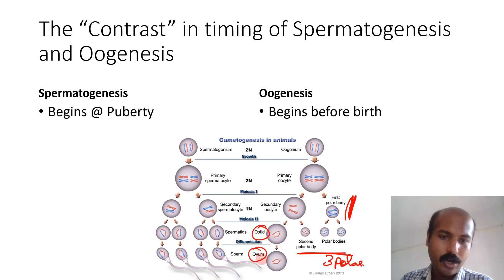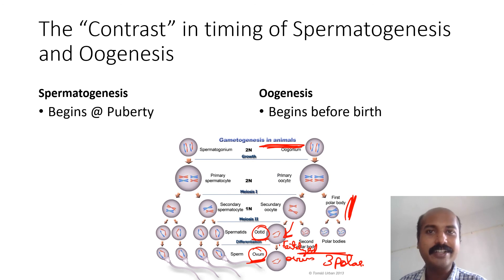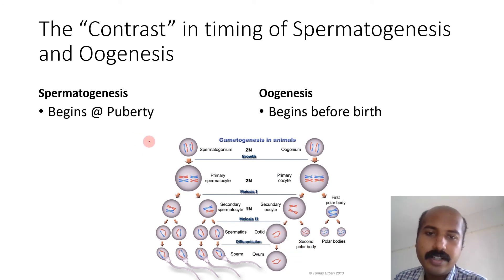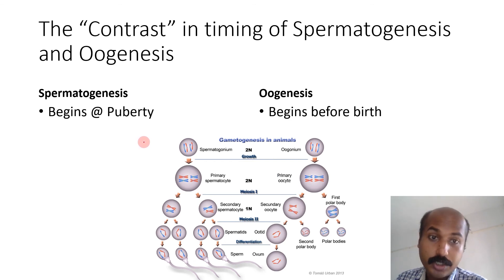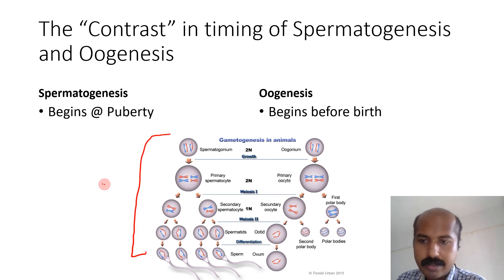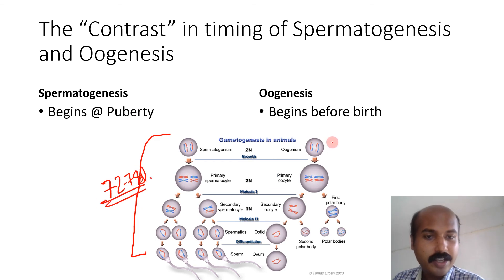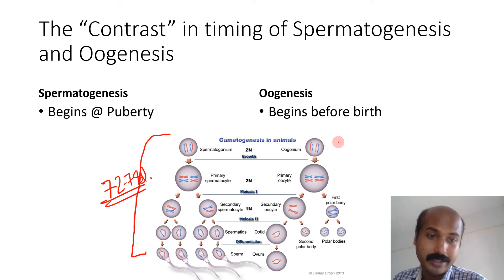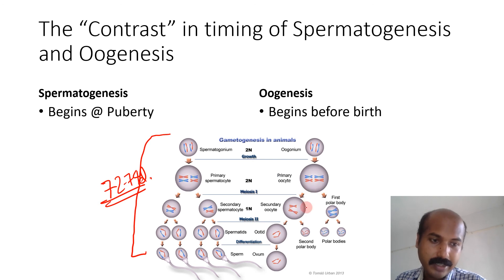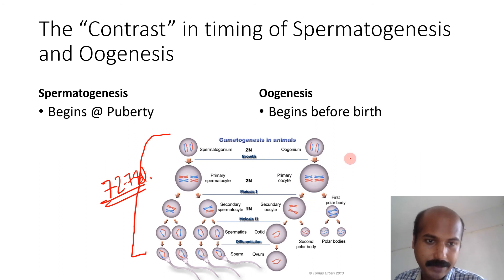Ootid and ovum are not found in humans — there is only a fertilized oocyte, not a true ovum. Regarding duration: spermatogenesis, from spermatogonium to spermatozoan, takes an average of 72 to 74 days. Oogenesis begins before birth, but the first meiotic arrest is released only at ovulation, making the total time span of oogenesis in the order of years.